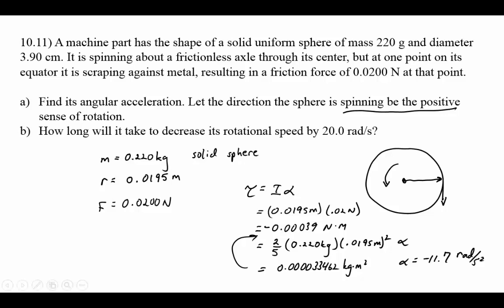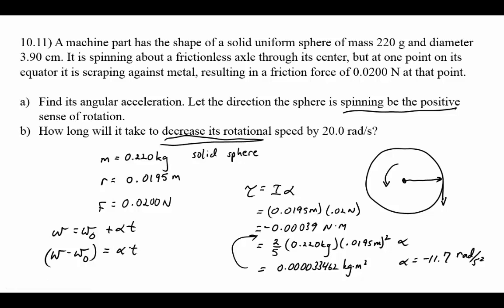How long will it take to decrease rotational speed by 20 radians per second? Using omega equals omega naught plus alpha t, the change in speed equals alpha t. So minus 20 radians per second equals negative 11.7 radians per second squared times t. That gives a time of 1.72 seconds.